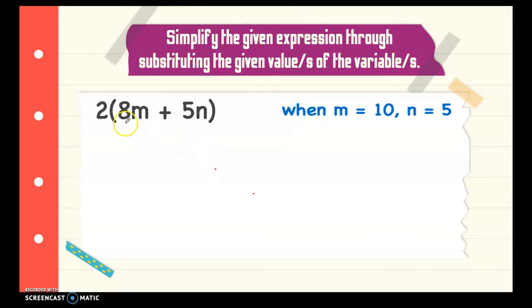Next, we have 2 open parenthesis 8m plus 5n close parenthesis and when m is 10 and n is equal to 5. Let's substitute the value of m which is 10 and the n is 5. I use parenthesis when I substitute the value of m. And since I use parenthesis inside the parenthesis, I use brackets here instead. This is what you call nested parenthesis.